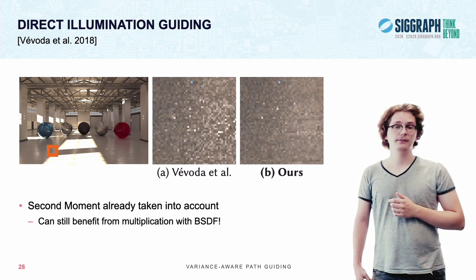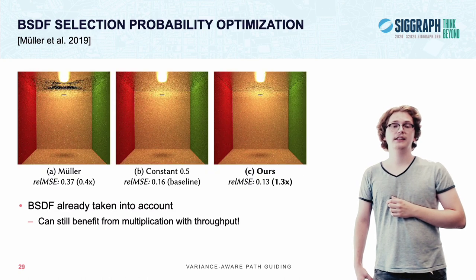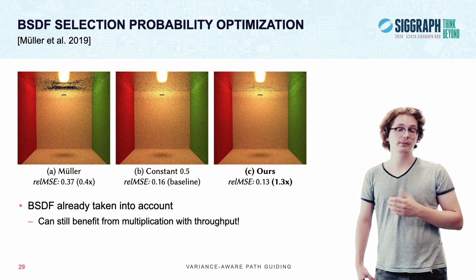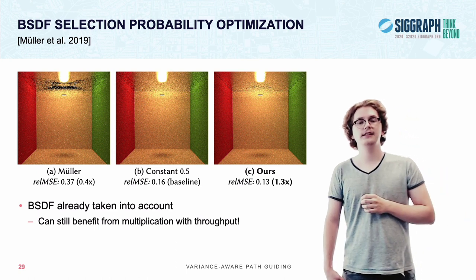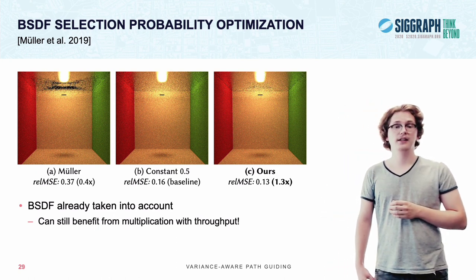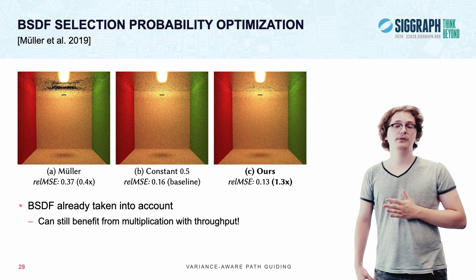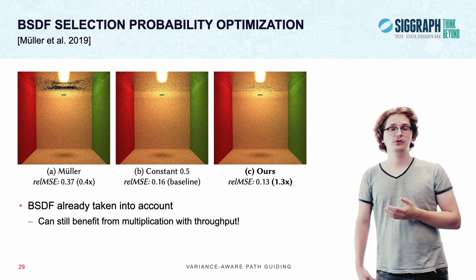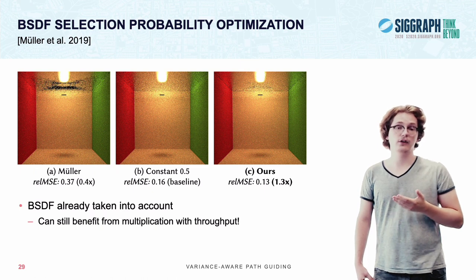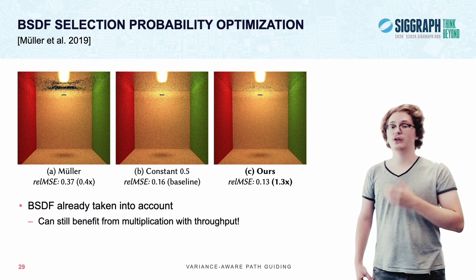Next up, there is BSDF selection probability optimization proposed by Müller and colleagues. Now, this method already takes the BSDF into account, but we have shown that by incorporating the throughput as well, like in our distribution, we are able to reduce artifacts that can occur in some special cases, like the Cornell box shown here.